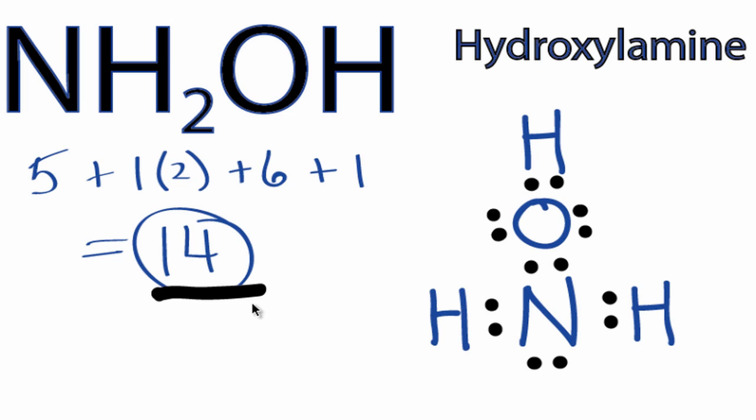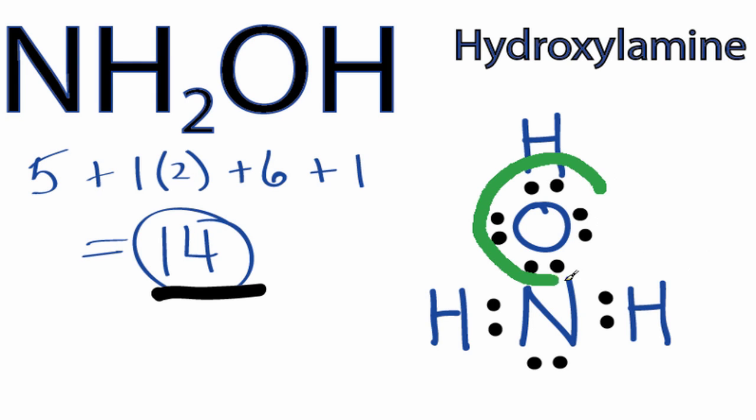So we've used all fourteen valence electrons. At this point in the NH2OH Lewis structure, all of the hydrogens have two valence electrons. The oxygen has eight, so its octet is full. And then the nitrogen has eight, so its octet is full as well. So that's the Lewis structure for NH2OH. I'm Dr. B, and thanks for watching.